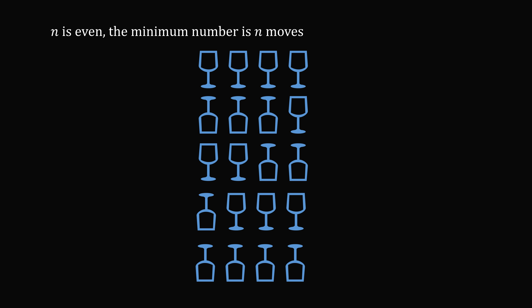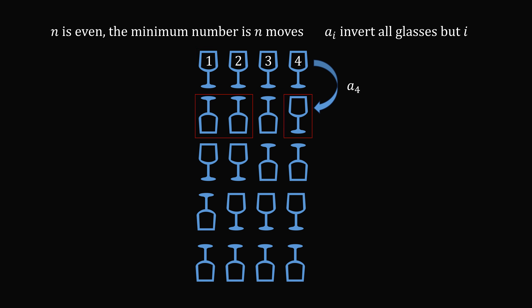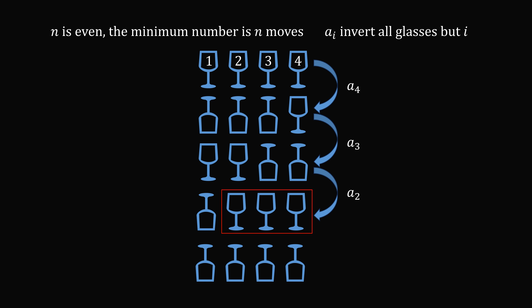Now let's consider the case that n is even. We will show the minimum number of moves is n. Let's refresh with the n=4 case. Number the glasses 1, 2, 3, and 4, and let ai denote the move that inverts all glasses except glass i. In move one we invert glasses 1, 2, and 3 — all except 4 — so this is a4. In move two we invert all except 3, so this is a3. Then a2, and finally a1. The sequence of moves a4, a3, a2, a1 provides a solution in exactly n moves. This generalizes: for n glasses, the n moves an, an-1, ..., a2, a1 constitute a solution.